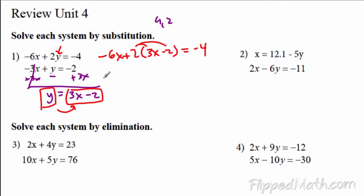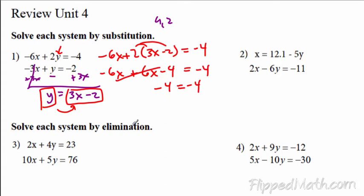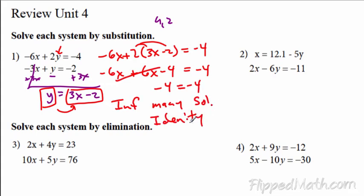Now it's a distributive property. Negative 6x plus 6x, and 2 times negative 2 is minus 4, all equals negative 4. The negative 6x plus 6x cancel out, and we get negative 4 equals negative 4. This is where we have infinitely many solutions — we can call it an identity. Remember, not all systems are identity or no solution, so just be careful. Some students like to put that after every single problem, and that's not necessary.